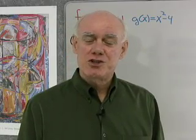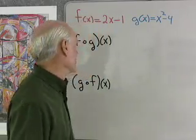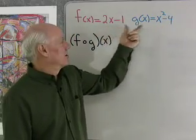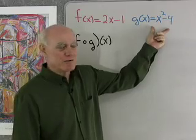Let's do a little bit more work with function notation and look at composition of functions. I have my same two functions right here. f is 2x minus 1. g is x squared minus 4.